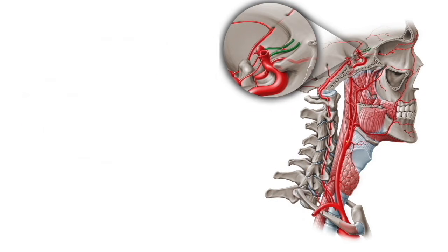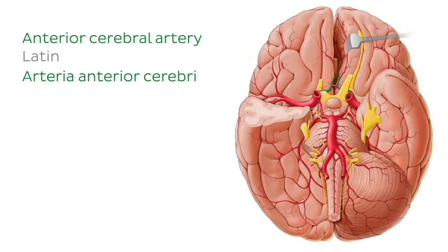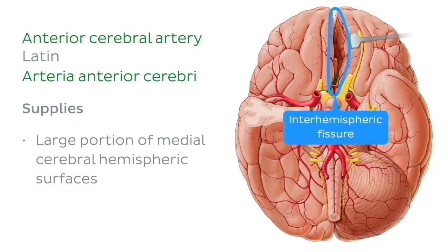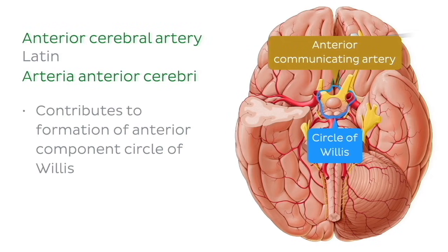As you can see here on this image, the anterior cerebral artery is one of the terminal branches of the internal carotid artery. Being located in the anterior and medial aspects of the interhemispheric fissure, it supplies a large portion of the medial cerebral hemispheric surfaces. Through the anterior communicating artery, it anastomoses with its contralateral counterpart, forming the anterior component of the circle of Willis.